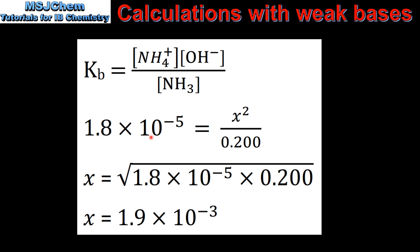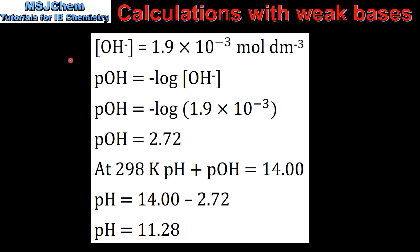Inputting our Kb value, we have X squared divided by the concentration of ammonia. Rearranging, X equals the square root of 1.8 times 10 to the negative 5 multiplied by 0.200. This gives a value for X of 1.9 times 10 to the negative 3, which is the concentration of the hydroxide ions. From that we calculate the pOH, which equals negative log of the hydroxide ion concentration, giving a pOH of 2.72.